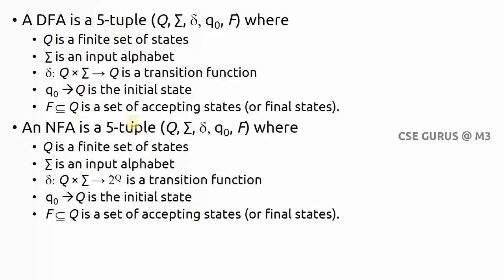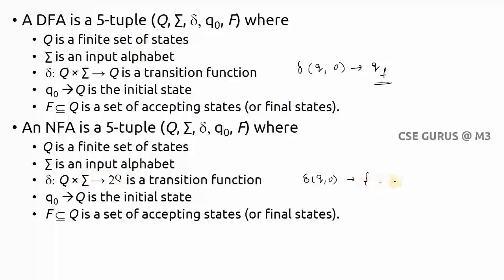Now observe the tuple notation difference. For DFA it is a 5-tuple and NFA is also a 5-tuple — Q, sigma, q0, and F are the same. The only difference is the mapping function: in DFA, delta of (state, input) goes to a single state Q, whereas in NFA, delta maps Q cross sigma to 2^Q, meaning it may go to any subset of states — potentially multiple output states.